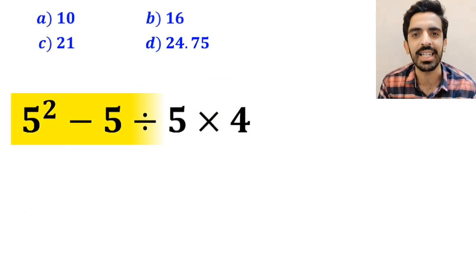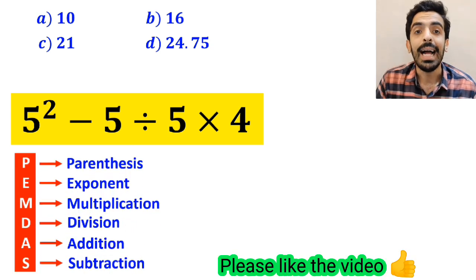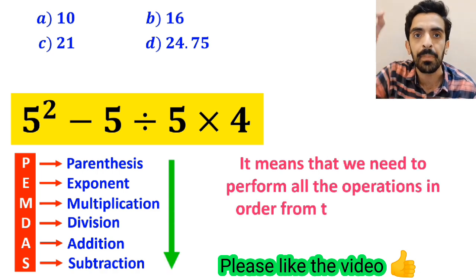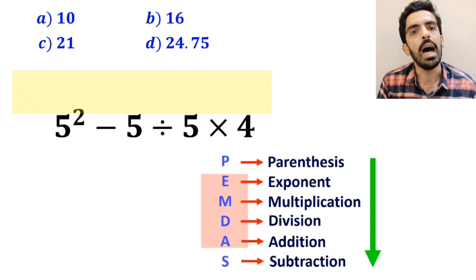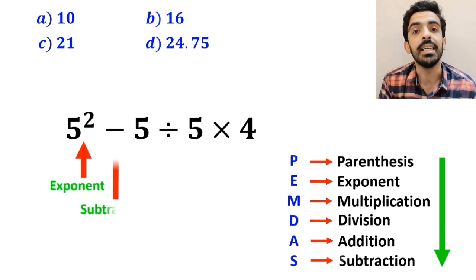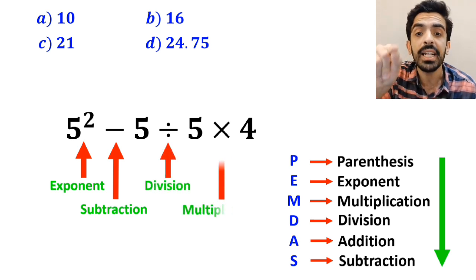Now let me show you how to solve this expression properly. To solve this problem we must follow the PEMDAS rule. It means that we need to perform all the operations in order from top to bottom. As you can see in the image and this expression, first we have an exponent then a subtraction sign followed by a division and finally a multiplication.